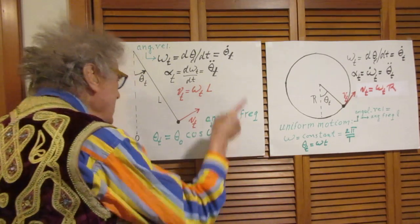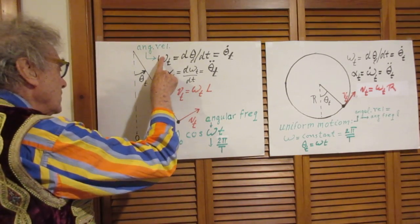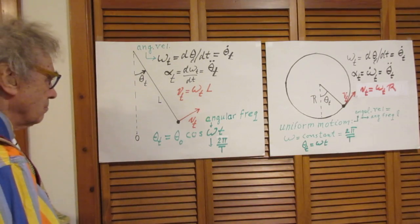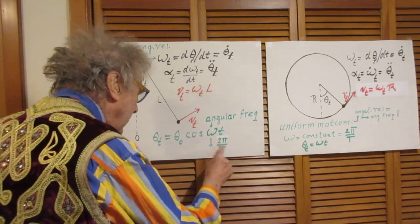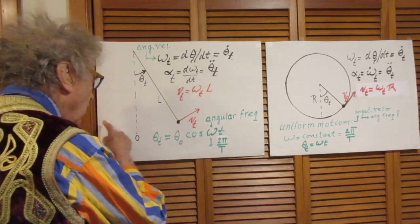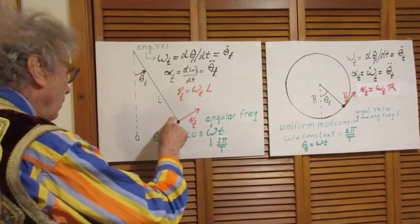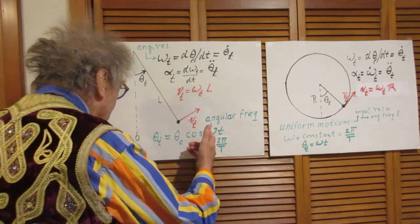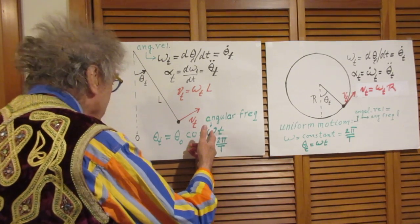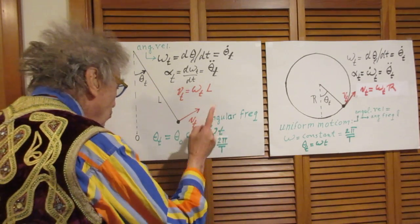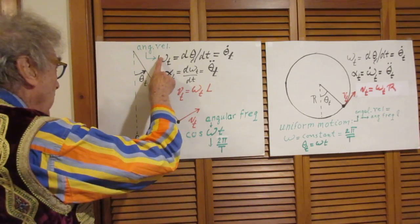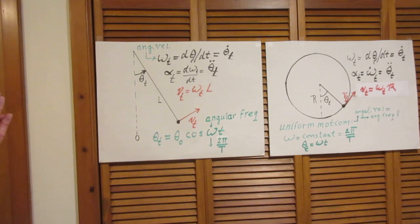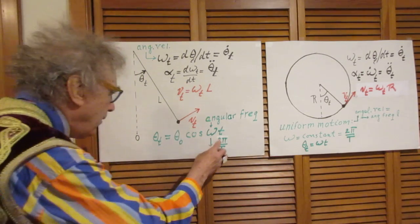This omega has nothing, nothing, nothing to do with that omega. This omega is a constant. This omega is 2 pi divided by capital T, which is the time that it takes for one complete oscillation. The higher omega, the more oscillations it makes per second. This omega is a constant. It's not changing in time. It has nothing to do with this omega. Let that sink in. I'll give you some time to let that sink in.